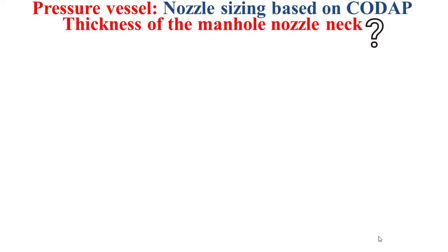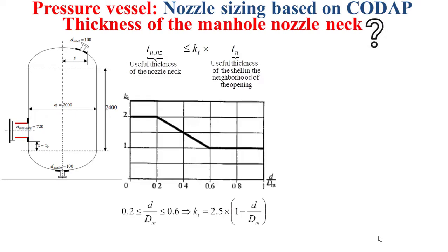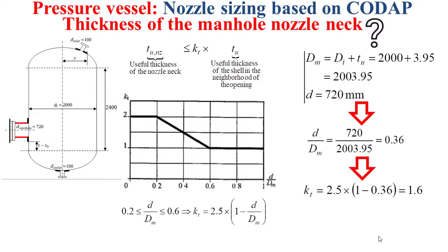Now for the thickness of the main hole nozzle neck, highlighted here in red. This nozzle neck should have a useful thickness that should not exceed a certain factor KT multiplied by the useful thickness of the shell in the neighborhood of the opening. The factor KT is obtained by this chart, which gives KT as a function of D divided by capital Dm. D here is the diameter of the opening and capital Dm is the mean diameter of the shell. Based on the internal diameter and the diameter of the opening, we can determine D divided by capital Dm, which is equal to 0.36. So we determine KT as 1.6, and finally we obtain that the useful thickness of the nozzle should not exceed 6.32 millimeters.